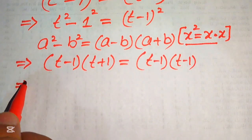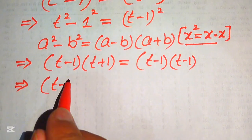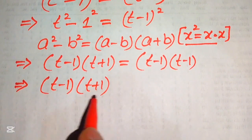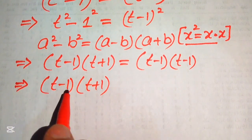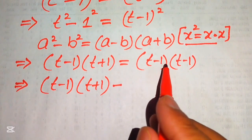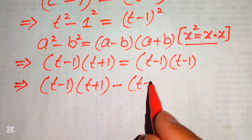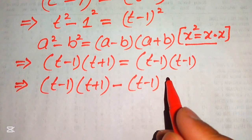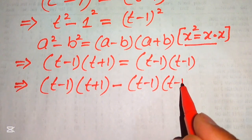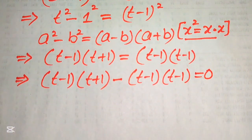In the next step we move all terms from the right hand side to the left hand side, giving us t minus 1 times t plus 1, minus t minus 1 times t minus 1, equals zero.